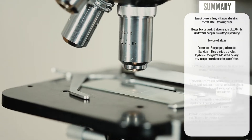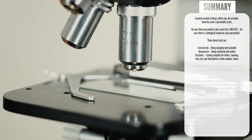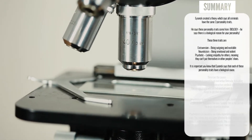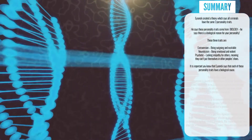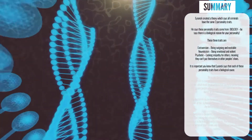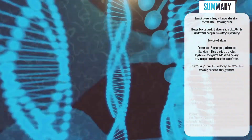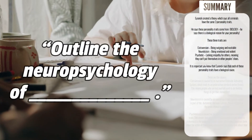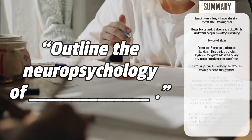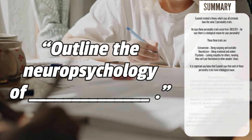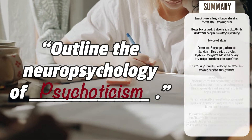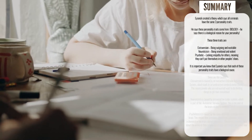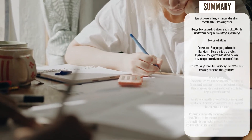I can't stress this enough: Isaac says that these three personality traits aren't just random — actually, you have something in your biology that may cause you to have these traits. In an exam, you may get a question that says 'outline the neuropsychology of blank' and it will give you one of the traits, so you need to be able to answer that. Let's take a look at the neuropsychology of each of the three personality traits.